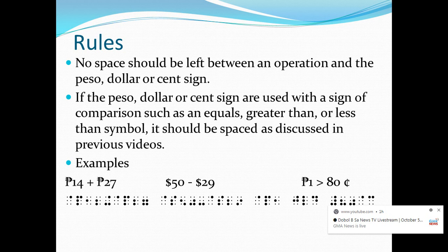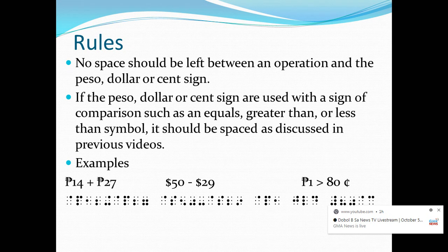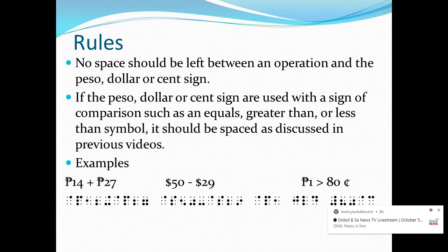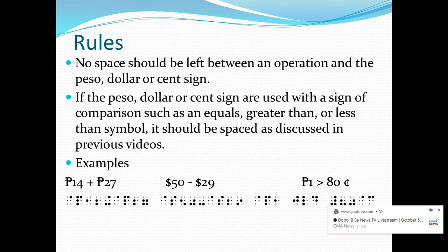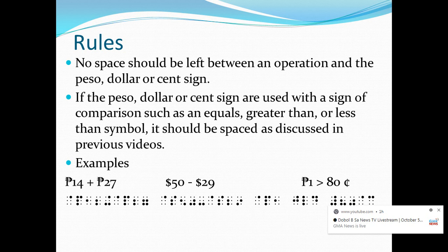Next example, we have $50 minus $29. So in Nemeth Braille code, we write the dollar sign — dot 4 on the first cell and letter S on the second cell — then digits 5 and 0, then the minus sign with no space after the 0. The minus sign is dots 3 and 6, and then we write the dollar sign again — dot 4 and letter S — and digits 2 and 9 for 29. There should be no space between the minus sign and the dollar sign.